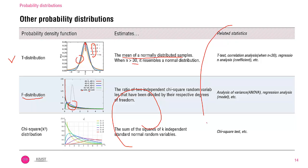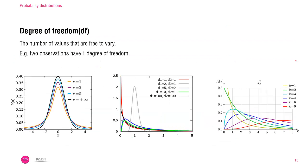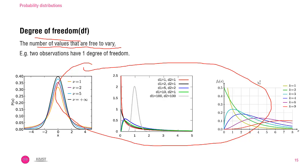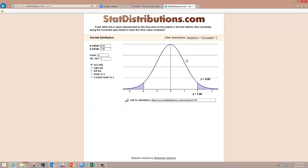To consult the value from the t-distribution, f-distribution, or chi-square distribution, we need to know the degree of freedom. As you see here, depending on the degree of freedom, the distributions are different. The degree of freedom is actually the number of values that are free to vary. For example, when you have two observations, you can say that you have one degree of freedom. Let me show you how the degree of freedom is working.